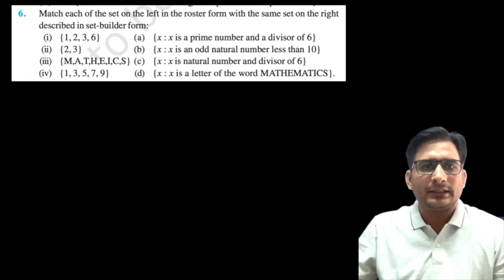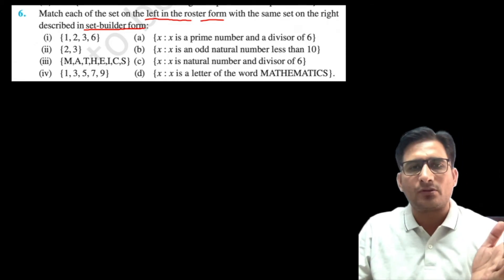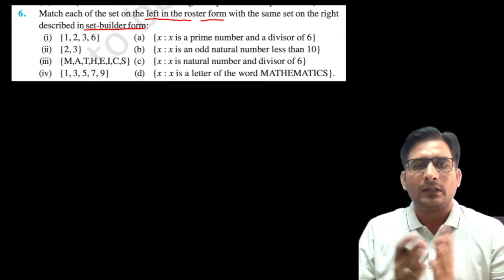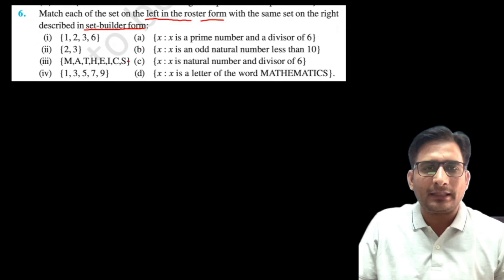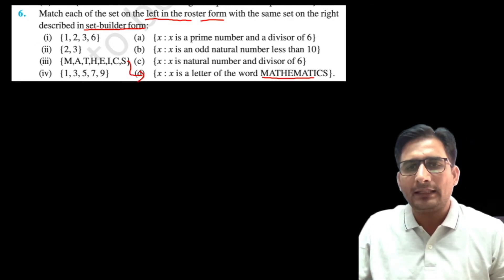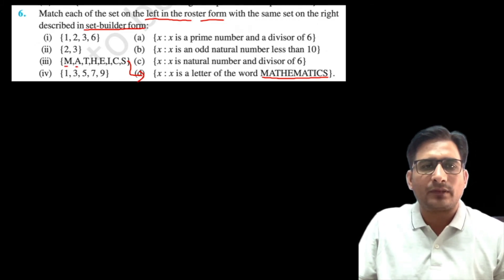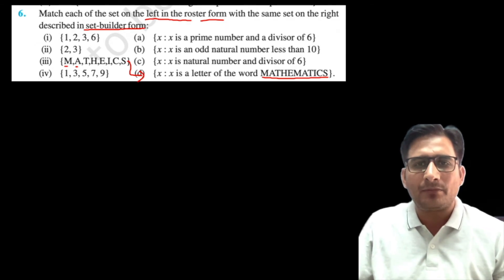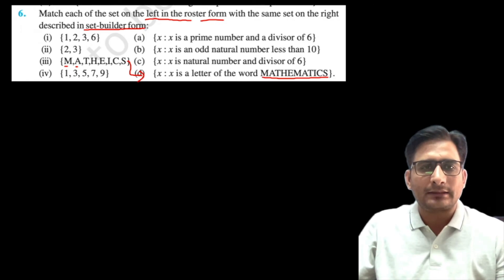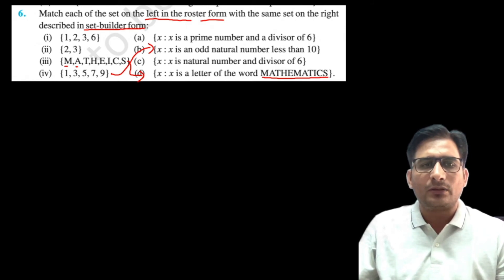Now Question 6: match each set on the left in roster form with the set builder form on the right. The set {1, 2, 3, 6} — which set builder description matches? Option: 'x is a natural number and divisor of 6.' Also {1, 3, 5, 7} corresponds to 'x is an odd natural number less than 10,' since odd natural numbers less than 10 are 1, 3, 5, 7.